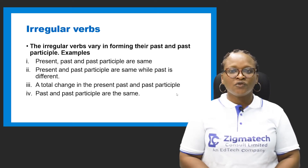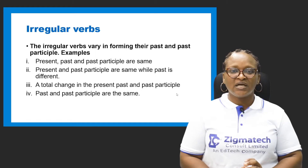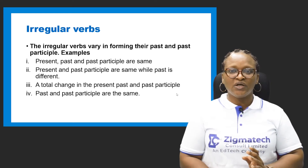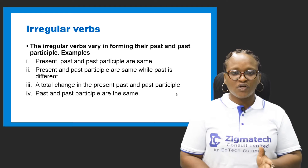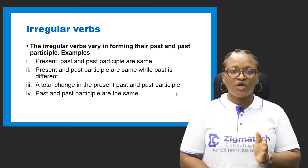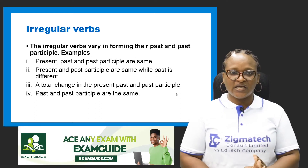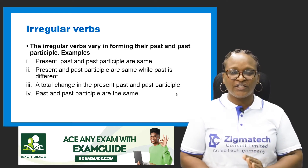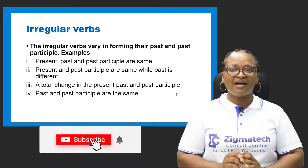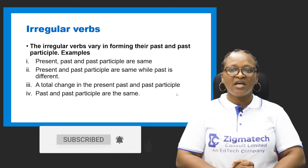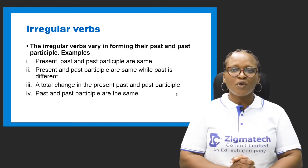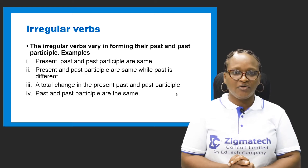Looking at irregular verbs, from the word 'irregular,' these types of verbs will not be steady. When we say something is irregular, it has different ways by which it is formed. There are four ways of forming irregular verbs. The first is a case where the present, the past, and the past participle are the same.